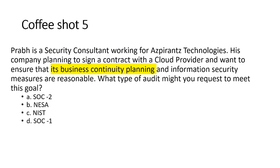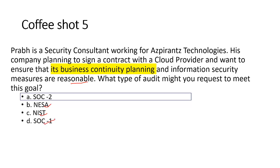Question 6: Prab is a security consultant for Aspirants Technology. His company is planning to sign a contract with a cloud provider and wants to ensure its business continuity planning and information security measures are reasonable. What type of audit might you request? NISA is specific to the Middle East; NIST is a US standard; SOC 1 is a financial statement. We're left with SOC 2. Answer: SOC 2, because the keywords are information security and business continuity planning, and we need to evaluate the cloud provider before signing a contract.